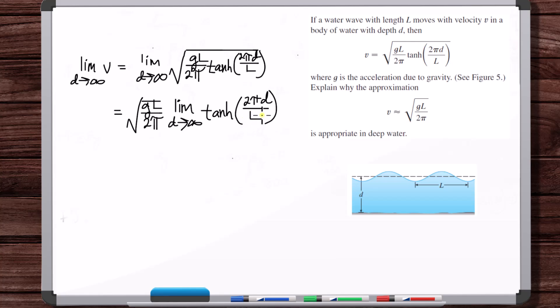If L is a function of D, then we need to do more analysis, but they're making it seem like L is constant or at least close to constant as we vary D.